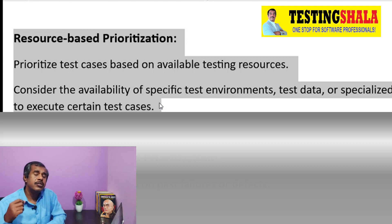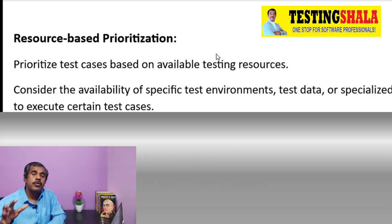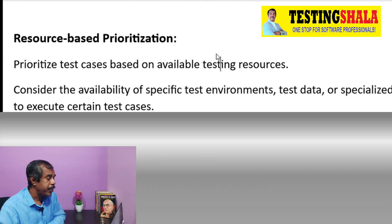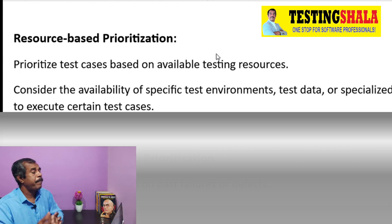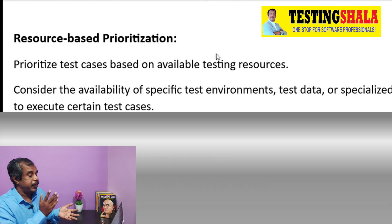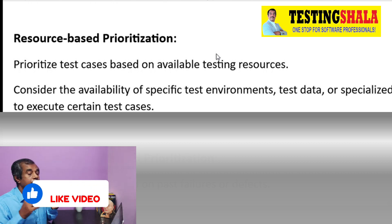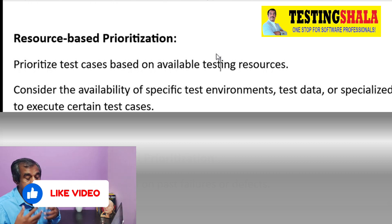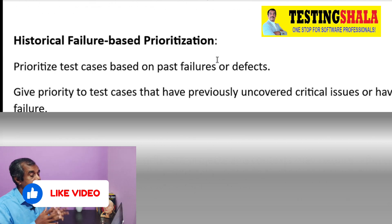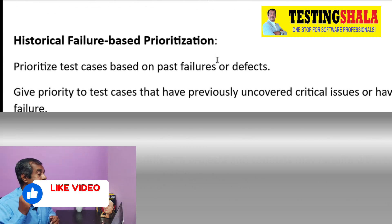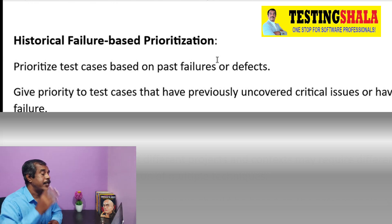The next one is resource-based prioritization. Resources are very crucial — it could be hardware resources, human resources, computers, laptops, or mobile devices. We prioritize test cases based on those resources, including the test environment, test data, and the skills available to execute those test cases.